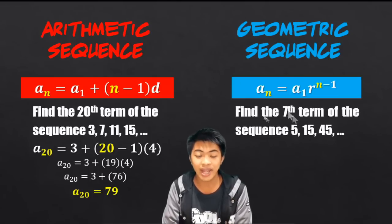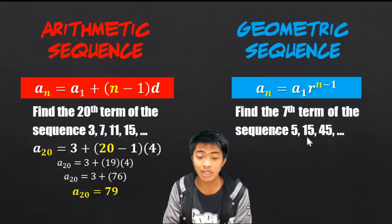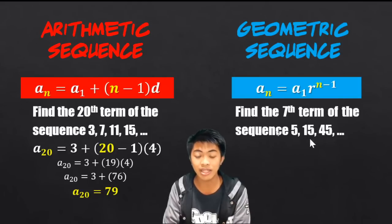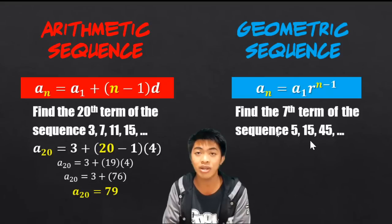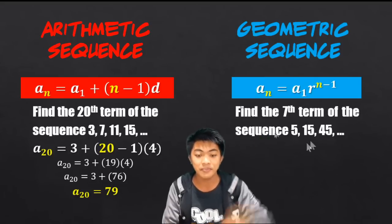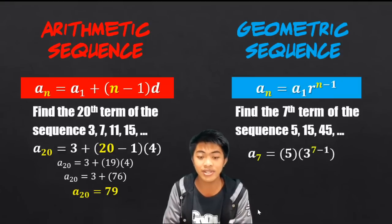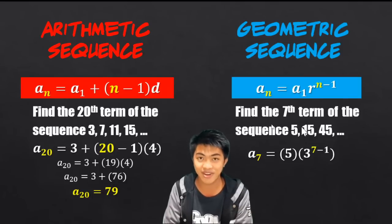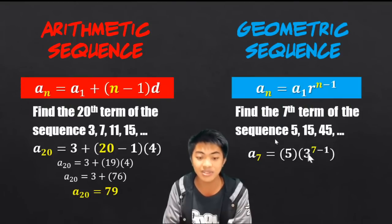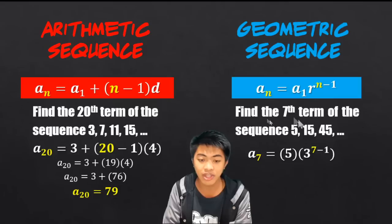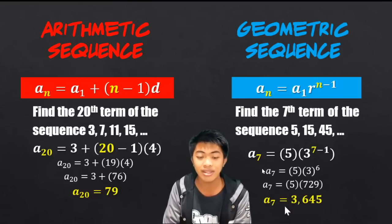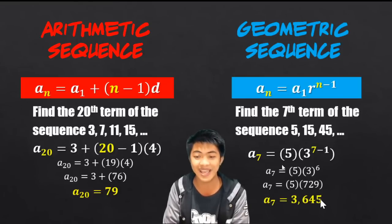If we also have this problem: Find the 7th term of the sequence 5, 15, 45 — obviously, we are multiplying by 3 to get the next term, but we are asked to get the 7th term. So it's a geometric sequence; we use the geometric sequence formula. We identify the first term and the common ratio. To get the common ratio, divide the second term by the first term: 15 divided by 5, which gives 3. Since we are looking for the 7th term, replace n with 7, simplify, and the answer is 3,645.